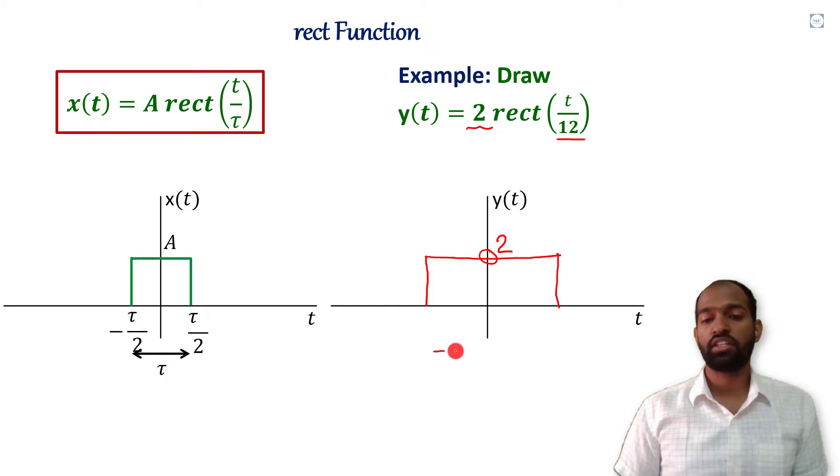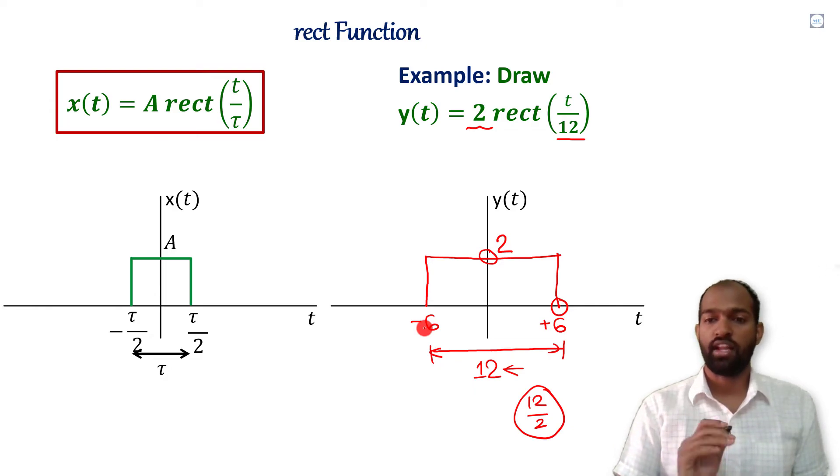And what will be its time period? Its time period will be τ. Whatever the value under t will be there which comes here. So, it will be 12. This is the point which is half of this point. If we divide 12 by 2 it will become 6. So, this will be plus 6 and this will be minus 6. As simple as like this.